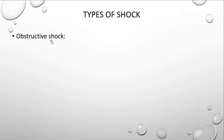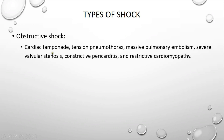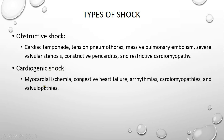The second type is obstructive shock, which can be due to cardiac tamponade, tension pneumothorax, massive pulmonary embolism, severe valvular stenosis of any of the valves, constrictive pericarditis, and restrictive cardiomyopathy. What happens here is that there is an obstruction to the outflow of blood out of the heart.